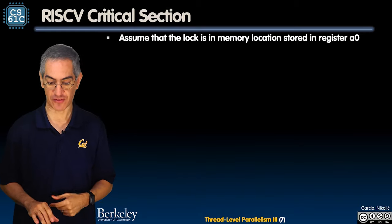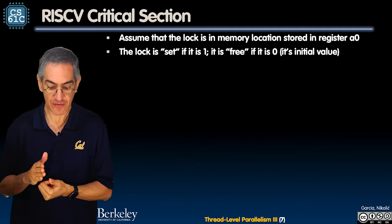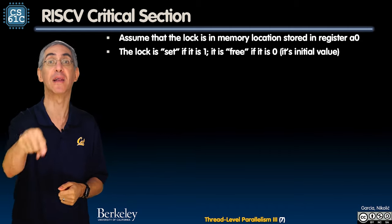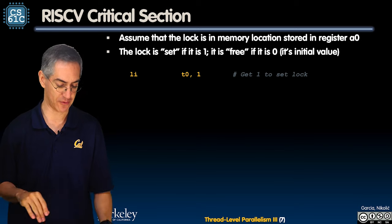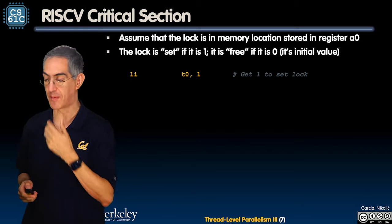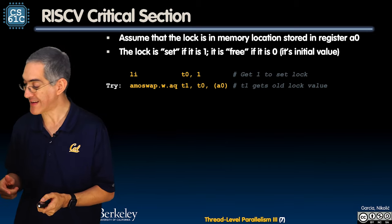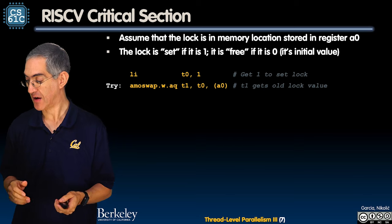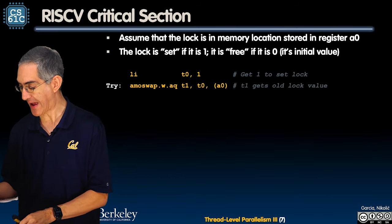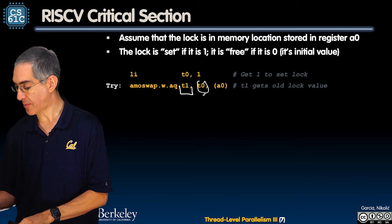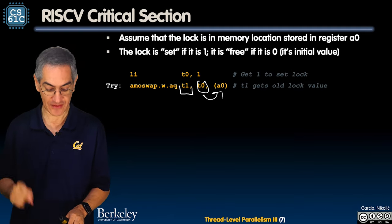AMO swap is another key operation. The lock is a memory location whose address is stored in register A0. Setting is one, unset (free) is zero. First, set T0 to one. Then AMO.SWAP.AQ T1, T0, (A0) — AQ stands for acquire, RL for release. This swaps T0 into the memory location pointed to by A0 and puts the old lock value into T1. So A0's memory now holds my one, and T1 holds whatever was there before.